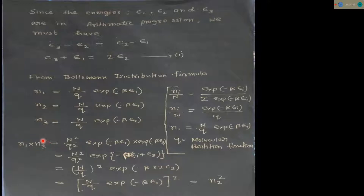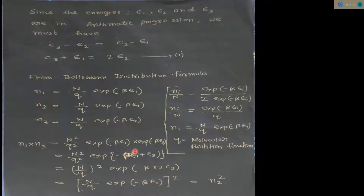Now if we multiply n1 into n3, it becomes N squared upon q squared times exponential minus beta epsilon 1, into exponential minus beta epsilon 3. Since these two exponential terms are in multiplication form, we add the exponents, giving exponential minus beta times the quantity epsilon 1 plus epsilon 3.